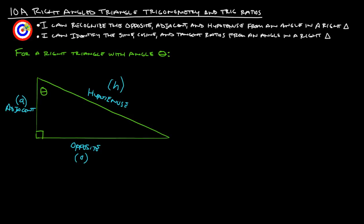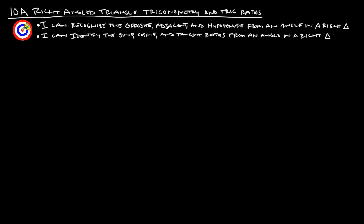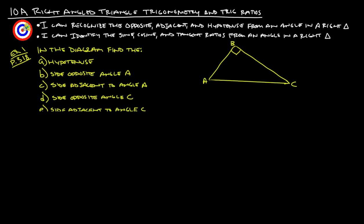The side next to this angle that's not the hypotenuse is considered the adjacent, or A. So those are the three different sides of a right triangle. This is example one from page 318. We're going to find the hypotenuse, the side opposite angle A, the side adjacent to angle A, the side opposite angle C, and the side adjacent to angle C.